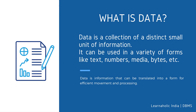First we will see what is data. Data is a collection of distinct small units of information. It can be used in a variety of forms like text, numbers, media, bytes, etc. It can be stored in pieces of paper or electronic memory. The word 'data' is originated from the word 'datum', which means a single piece of information; it is the plural of datum. In computing, data is information that can be translated into a form for efficient movement and processing. Data is interchangeable.